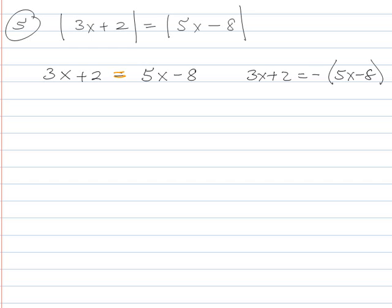So you still treat it the same way. It's either equal to the thing inside, or it's equal to the negative of the thing inside. So what obviously makes this a little bit more interesting is the fact that you have to distribute that negative across to get 3x plus 2 is equal to negative 5x plus 8. And now you have to solve these for x.